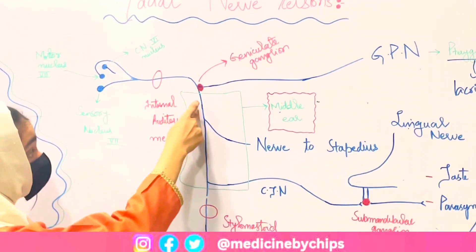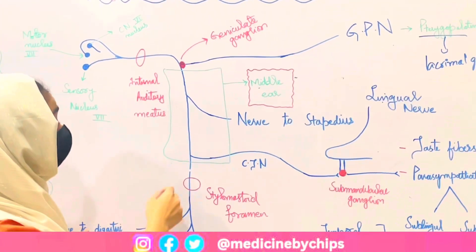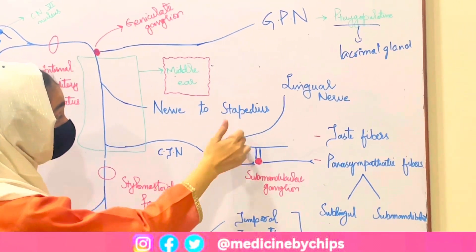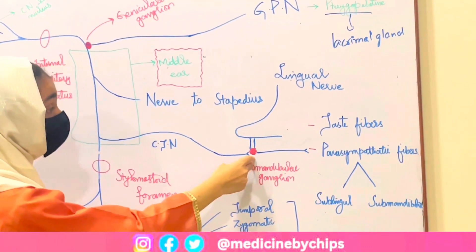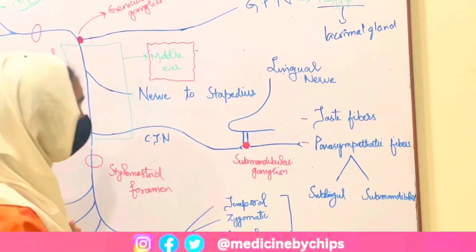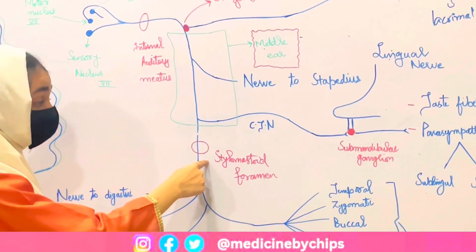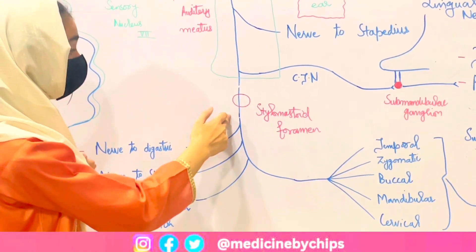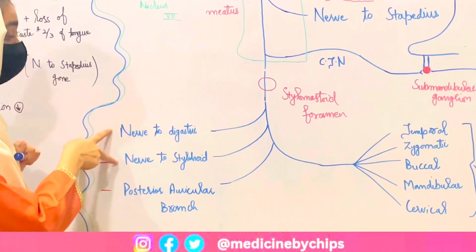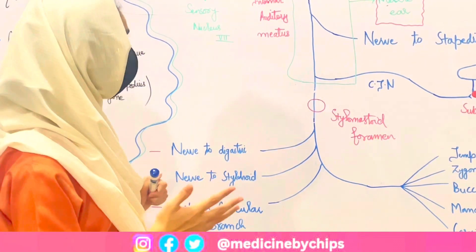From the internal auditory meatus, the nerve enters the middle ear, where it gives rise to two branches: the nerve to the stapedius, which supplies the stapedius muscle in the middle ear, and the chorda tympani. The chorda tympani goes to the submandibular ganglion, which hangs with the lingual nerve, giving rise to parasympathetic fibers that supply the sublingual and submandibular glands, controlling their secretion. After exiting the middle ear, the nerve exits the skull through the stylomastoid foramen, giving rise to three branches: the nerve to digastric, nerve to stylohyoid, and the posterior auricular branch, which supplies the posterior auricularis and occipital part of the occipitofrontalis muscle.